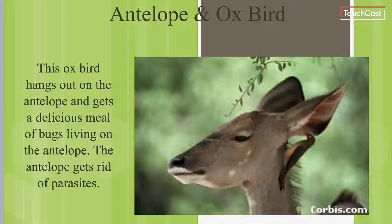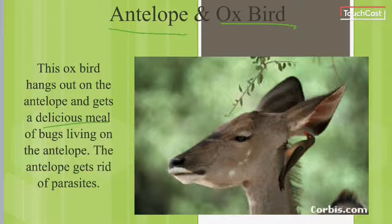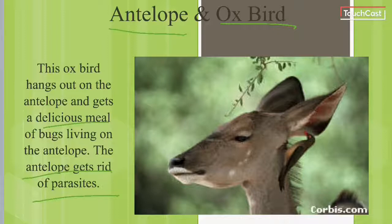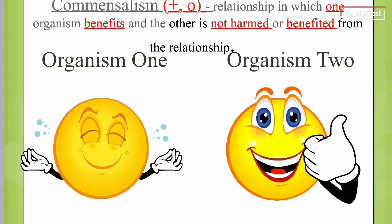Your last mutualism example is the antelope and the oxbird. The oxbird hangs out on the antelope and gets a delicious meal of bugs living on the antelope. The antelope gets rid of parasites — things that cause harm to another organism. So the antelope and the oxbird have a mutualistic relationship — it's a positive for both.